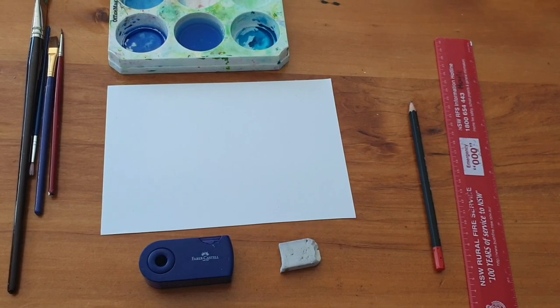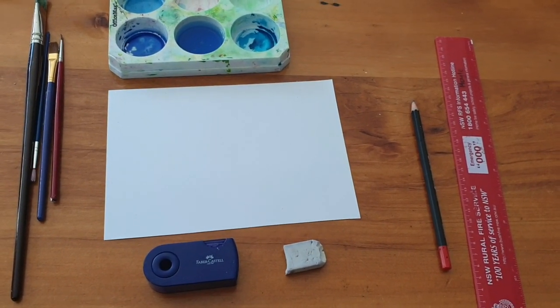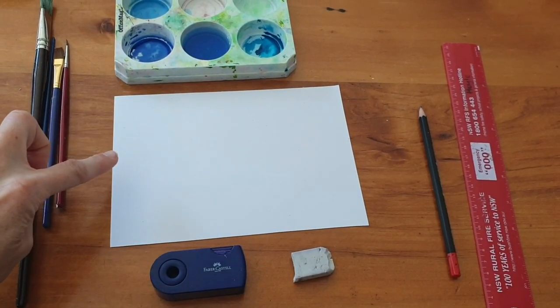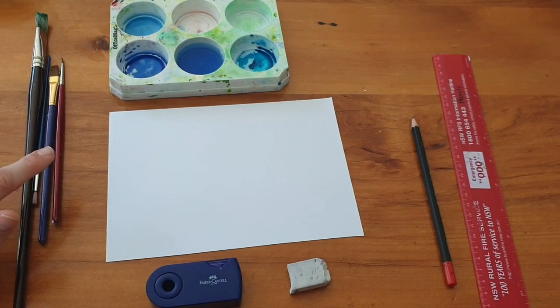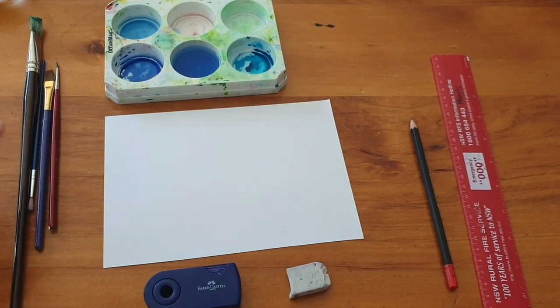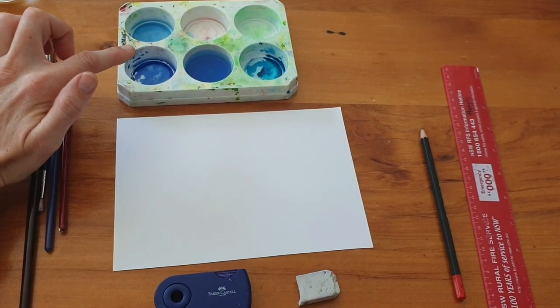So you're going to need your pencil and a ruler and a rubber and a sharpener, and then I've got a piece of paper here. If you can manage to find some in your home, grab out a paintbrush and if you have any colors like watercolors or anything that you can paint with, that's great.